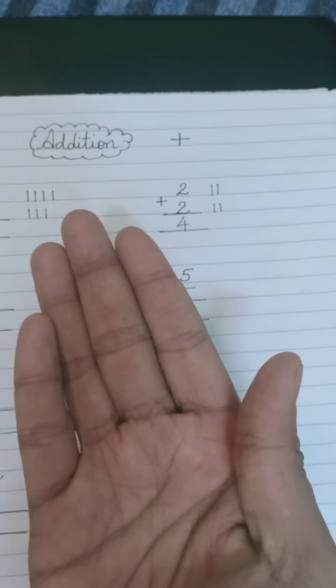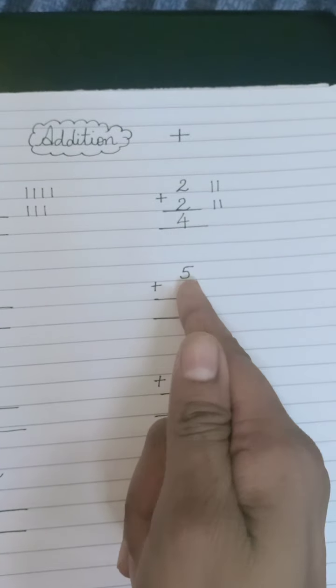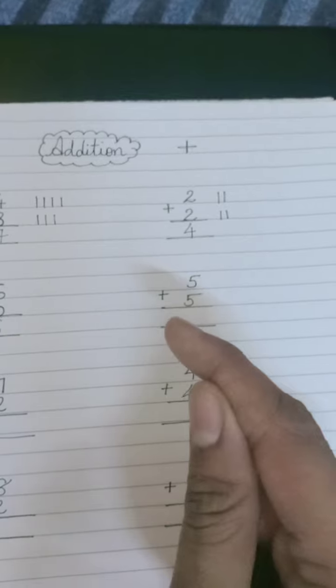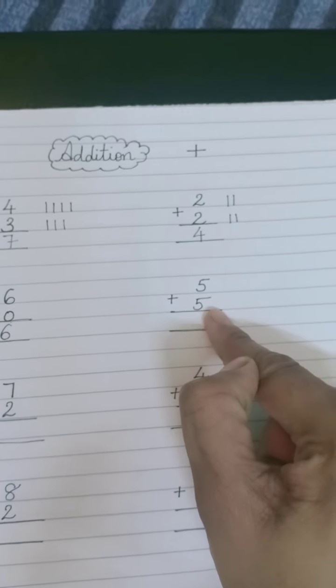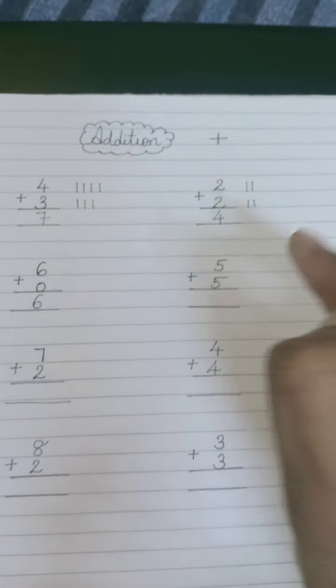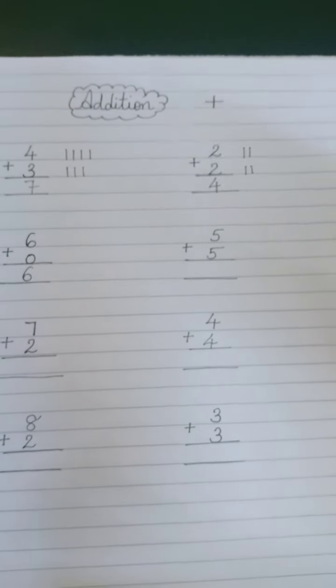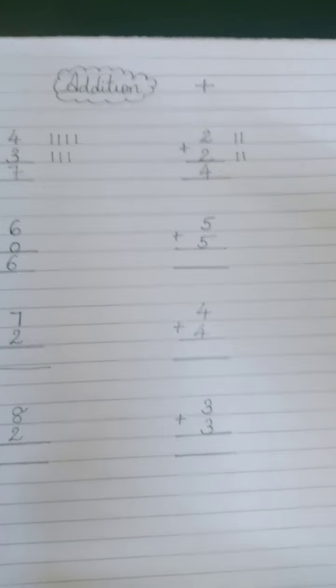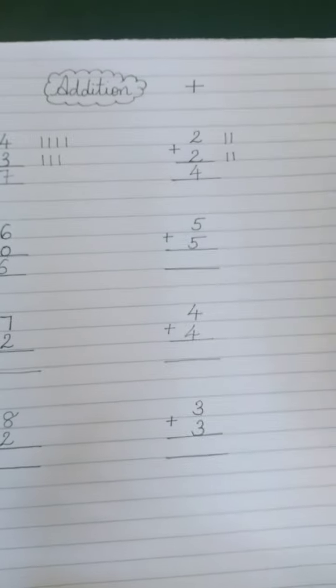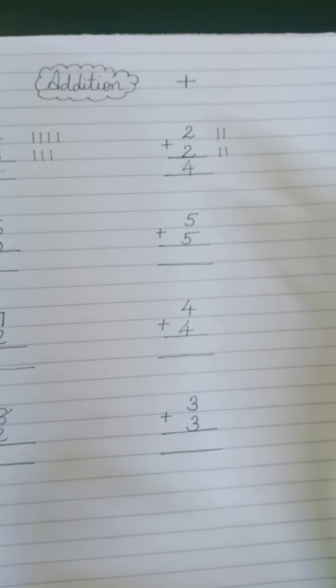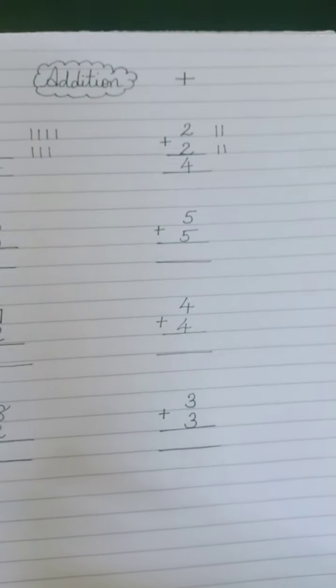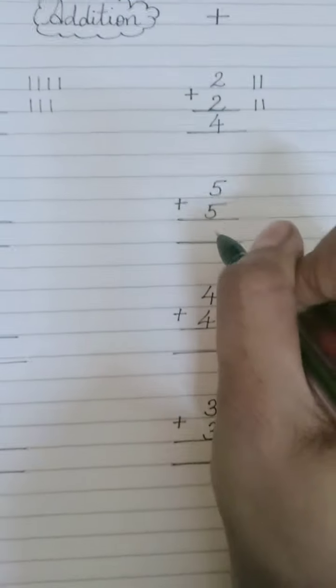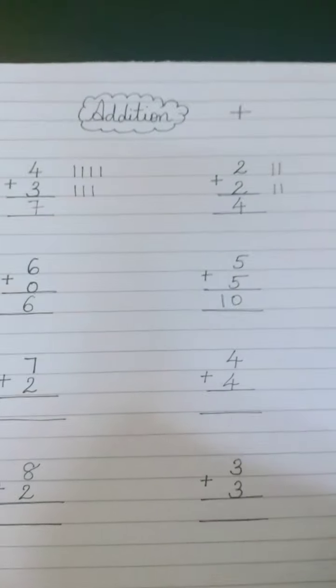Teach children this way: keep one five in your mind and count on your fingers. Now what will you do? After the five in your mind, you will add these five fingers. Tell the child to add them, meaning start counting from six for your five fingers. Five is in the mind, now six, seven, eight, nine, ten. Like this, you got the answer ten.